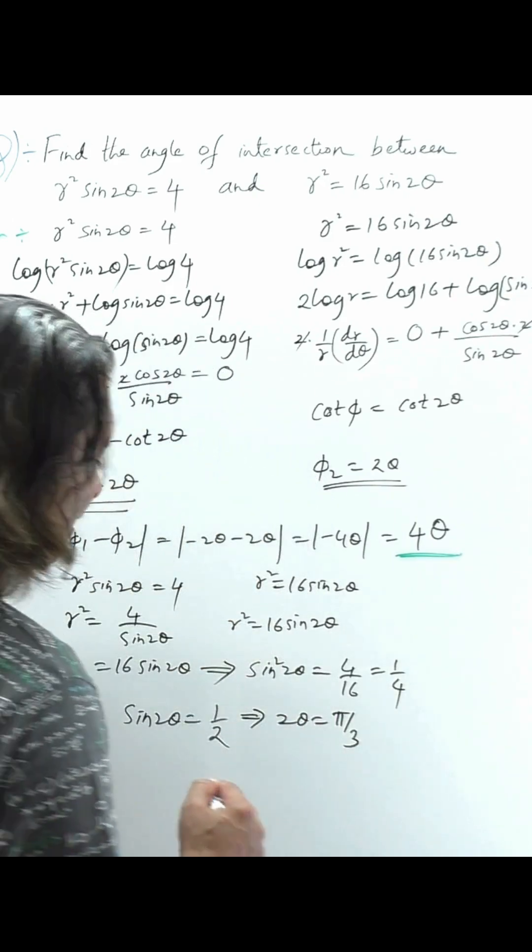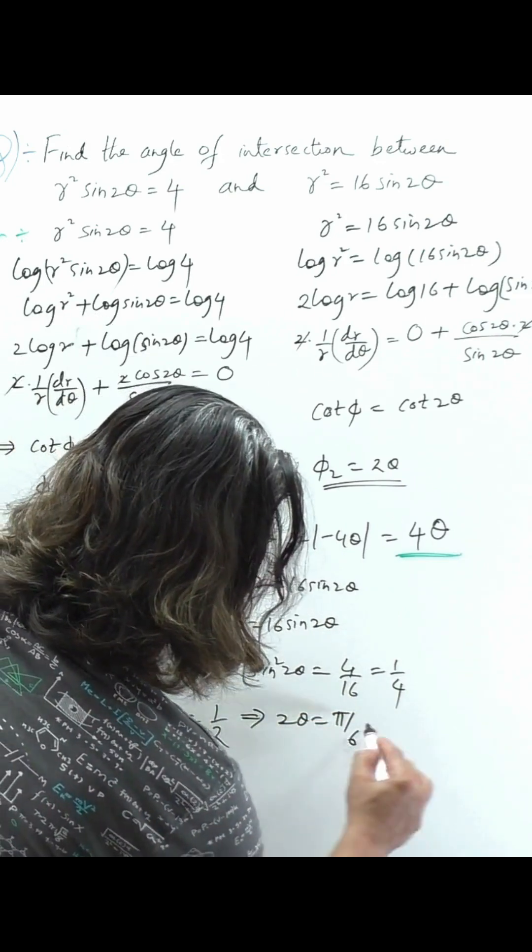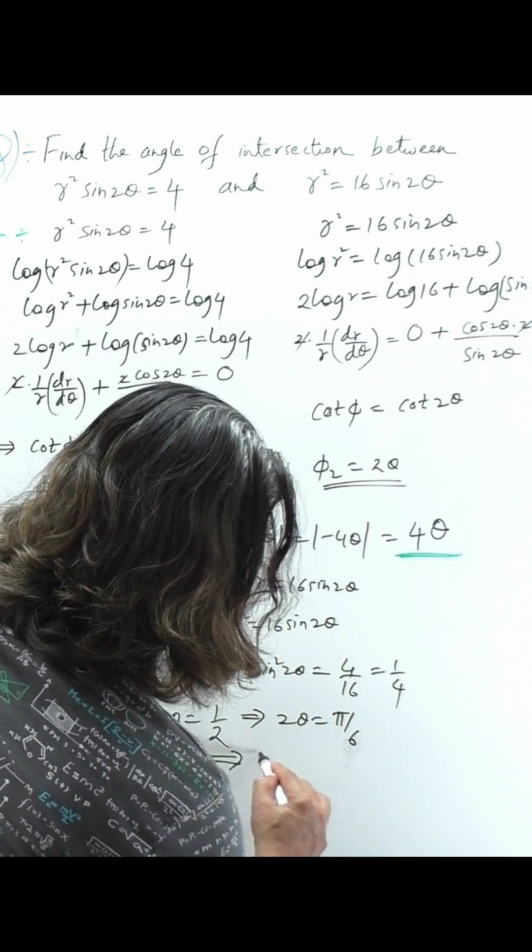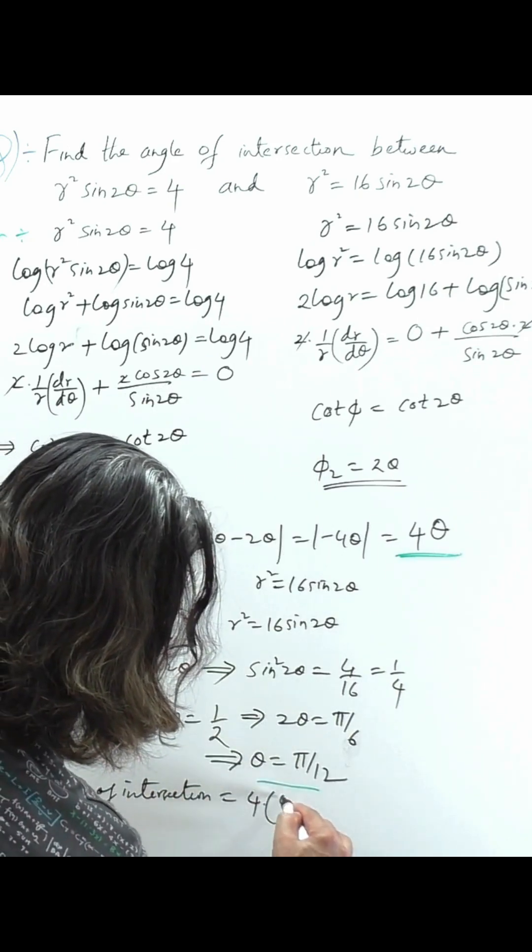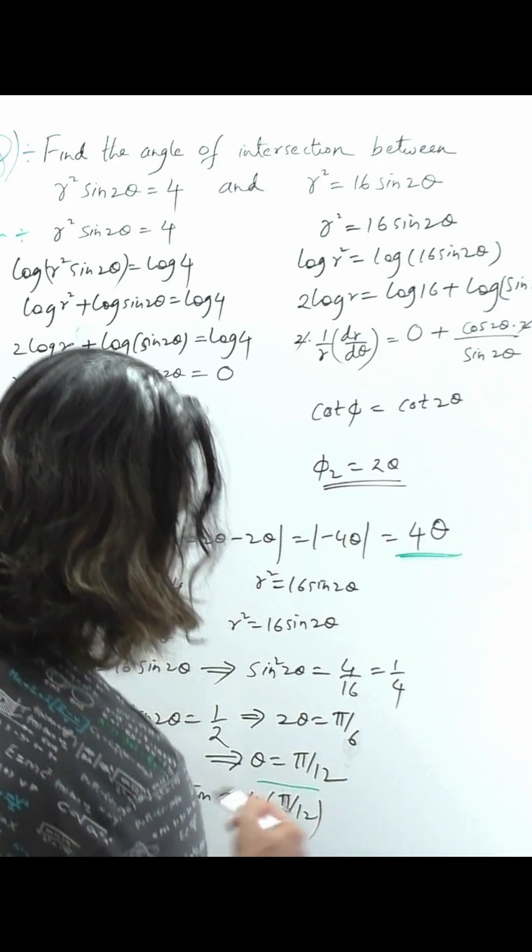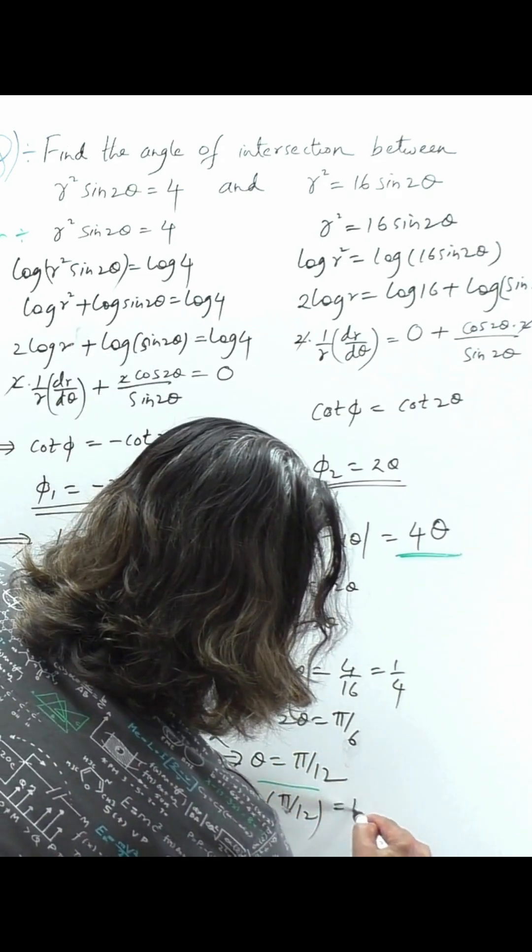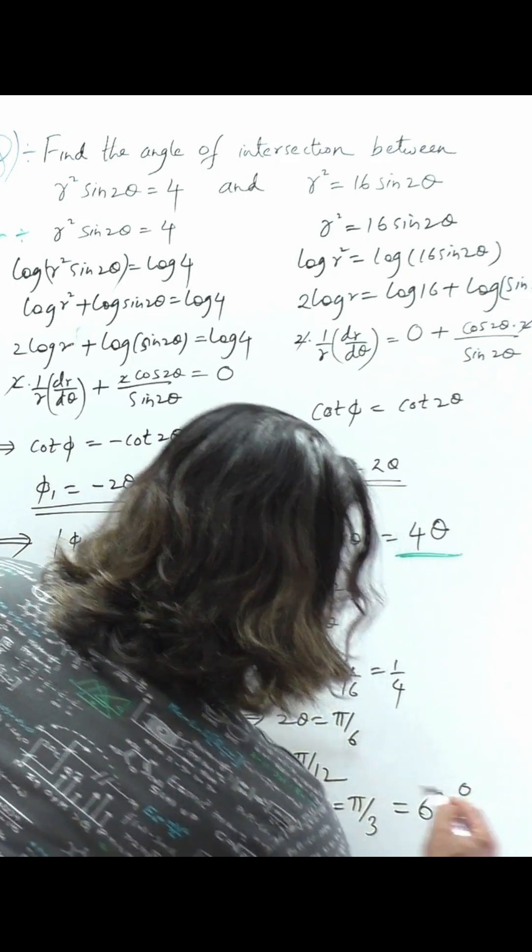So 30 degrees means 2θ = π/6, which means θ equals π/12. The angle of intersection will be 4 times π/12, which is π/3. So the angle of intersection is 60 degrees.